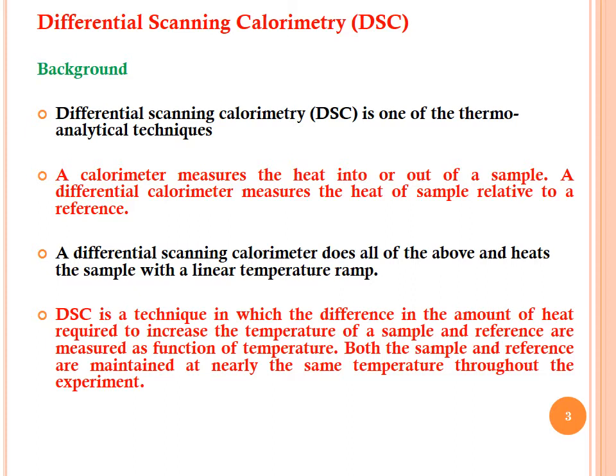Differential scanning calorimetry does all the above and heats the sample with a linear temperature ramp. DSC is a technique in which the difference in the amount of heat required to increase the temperature of the sample and reference are measured as a function of temperature. The sample and the reference are maintained at nearly the same temperature throughout the experiment, so everything revolves around the heat content of the system.